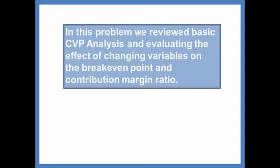So here we've reviewed our basic CVP analysis and evaluated the effect of changing variables on the break-even point and the contribution margin ratio. You should be able to analyze what happens to income, the contribution margin per unit, and various other things. This problem just showed you an approach to do that.